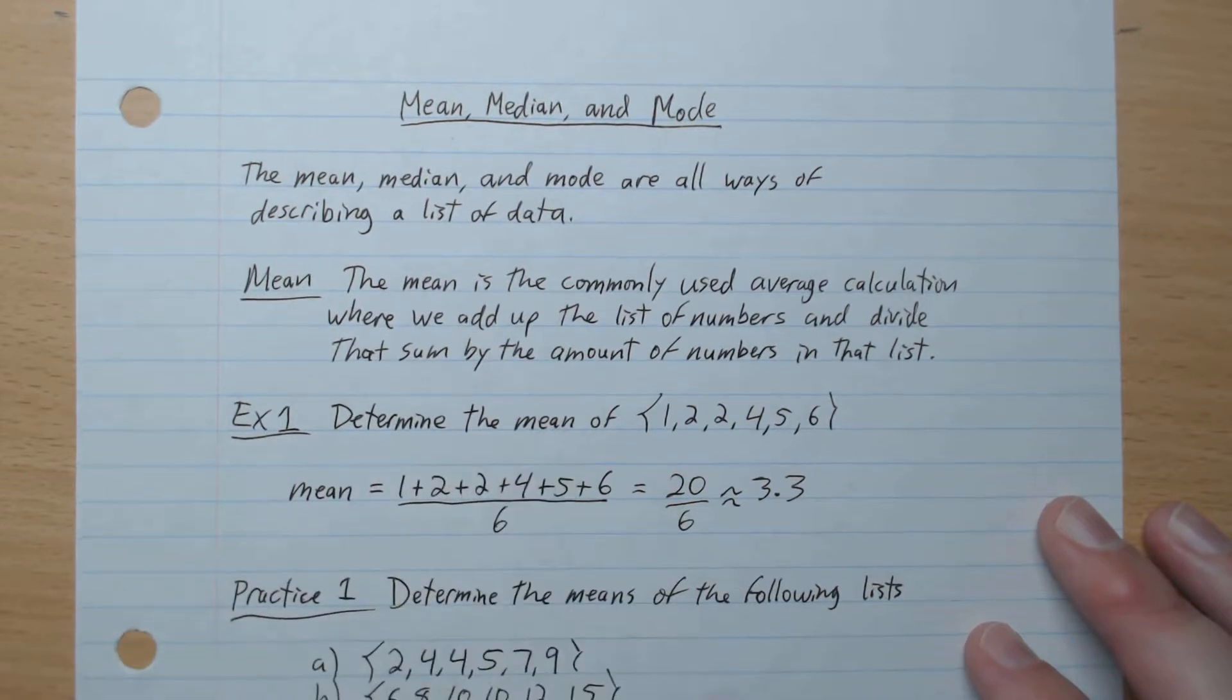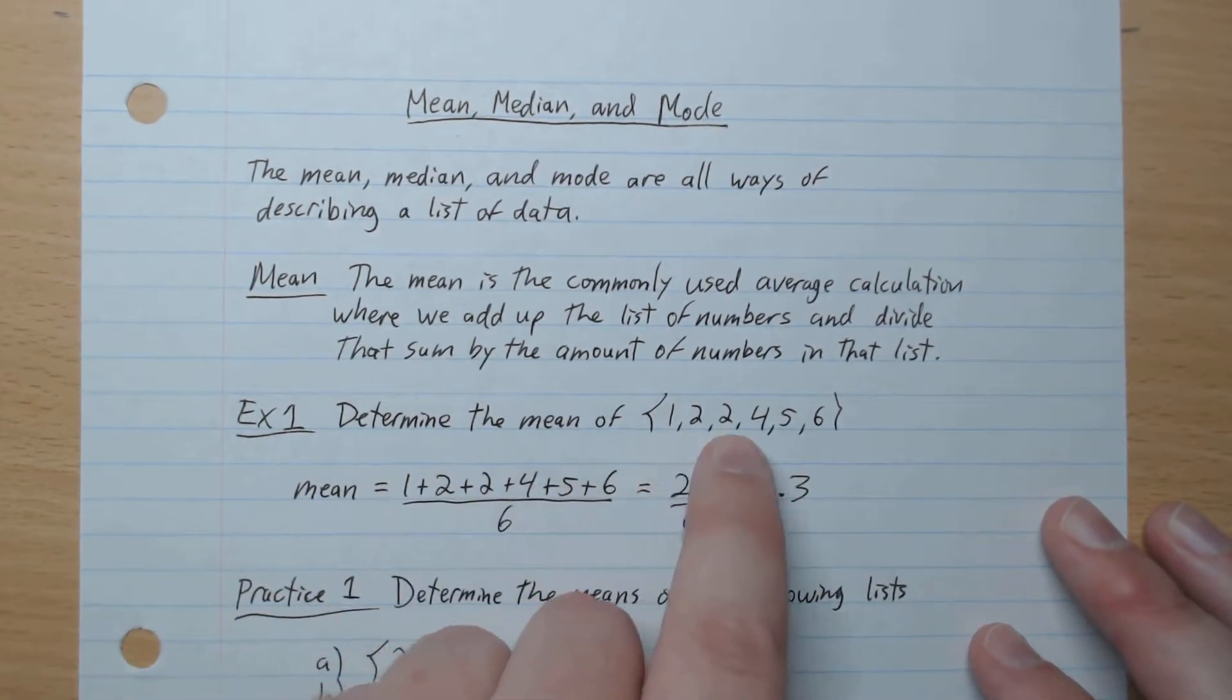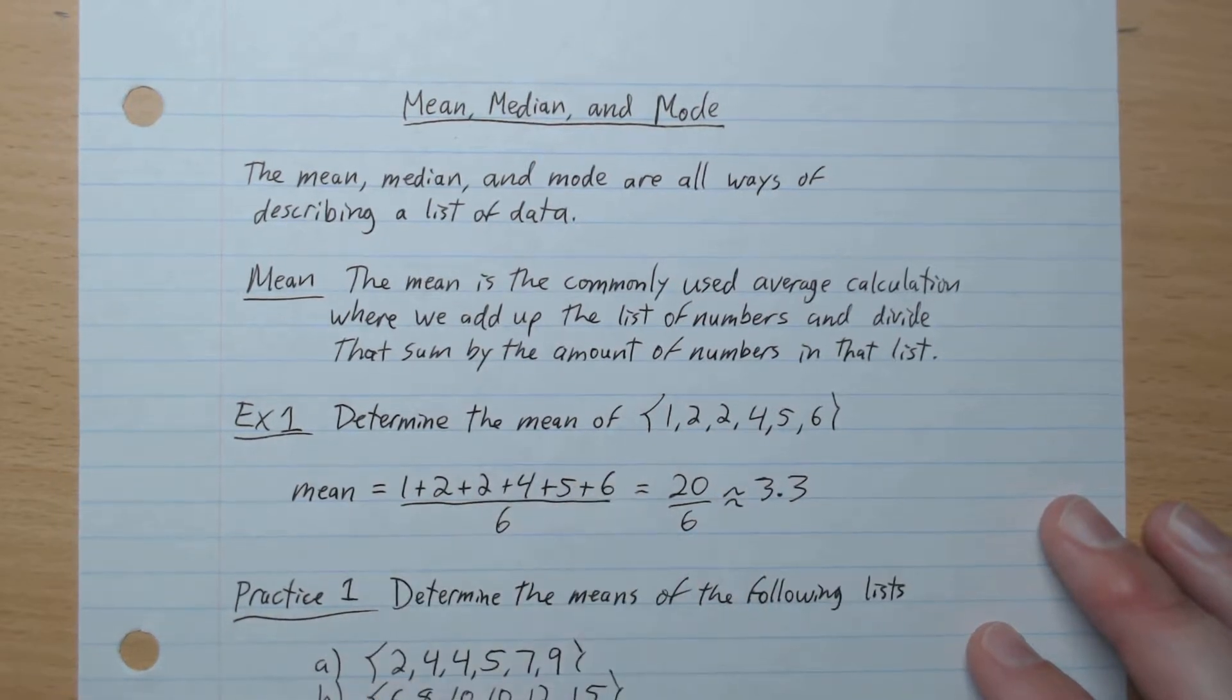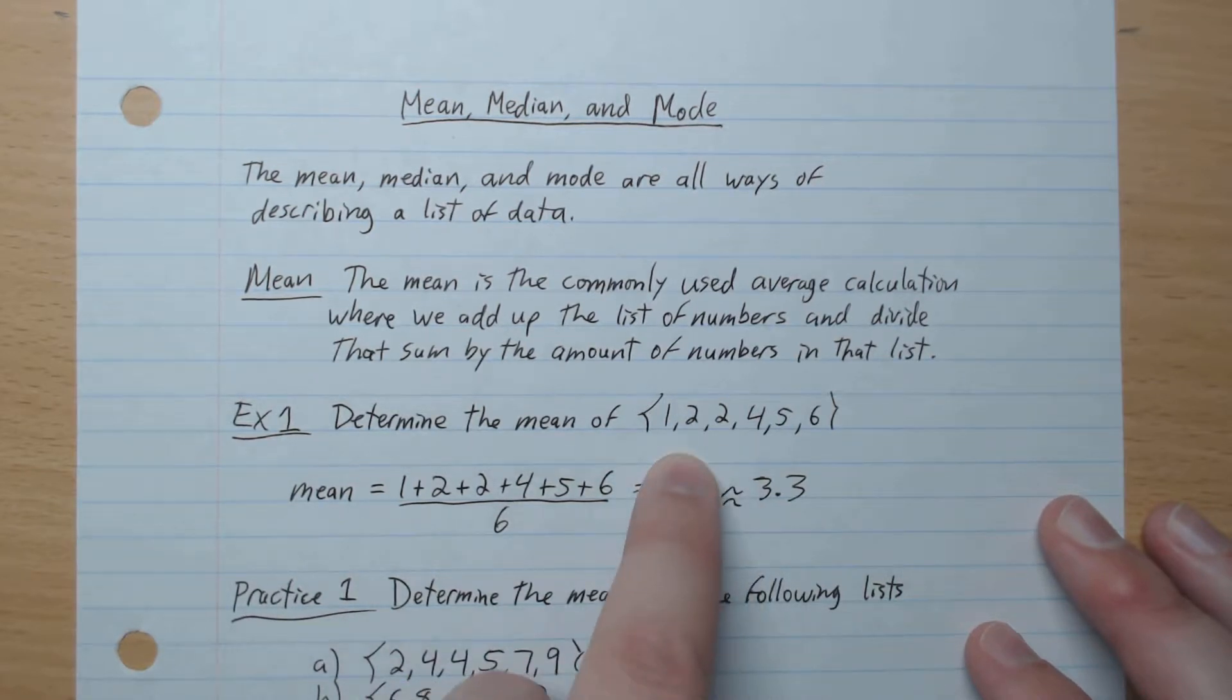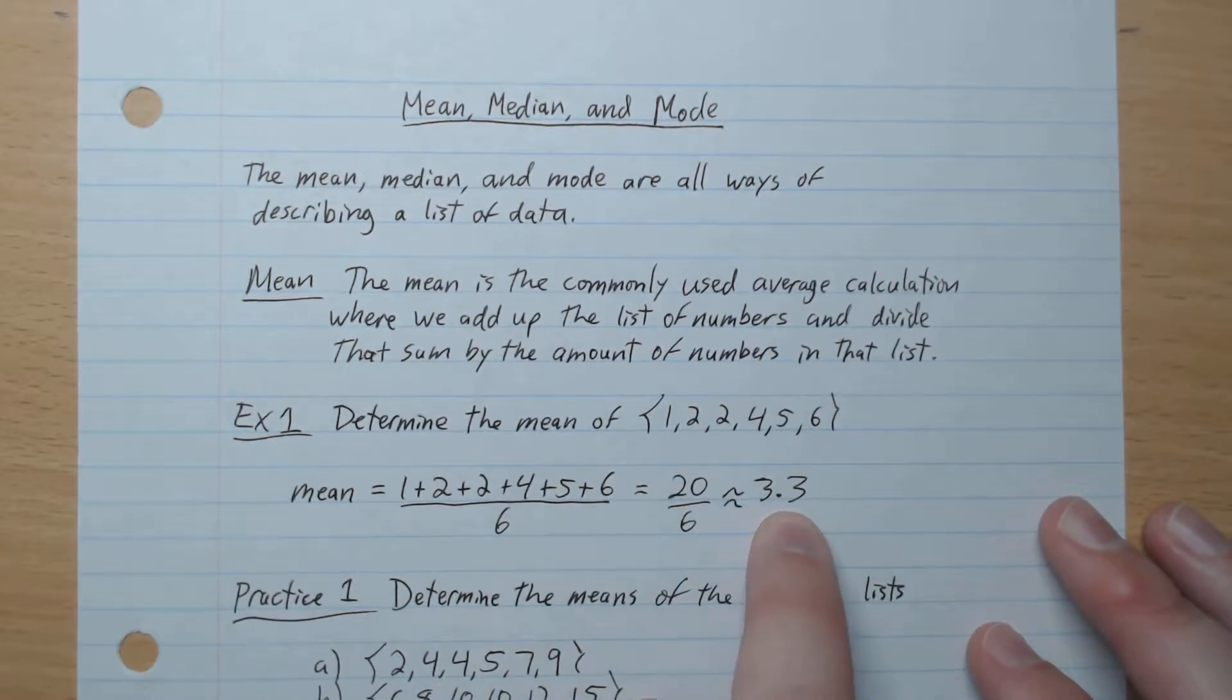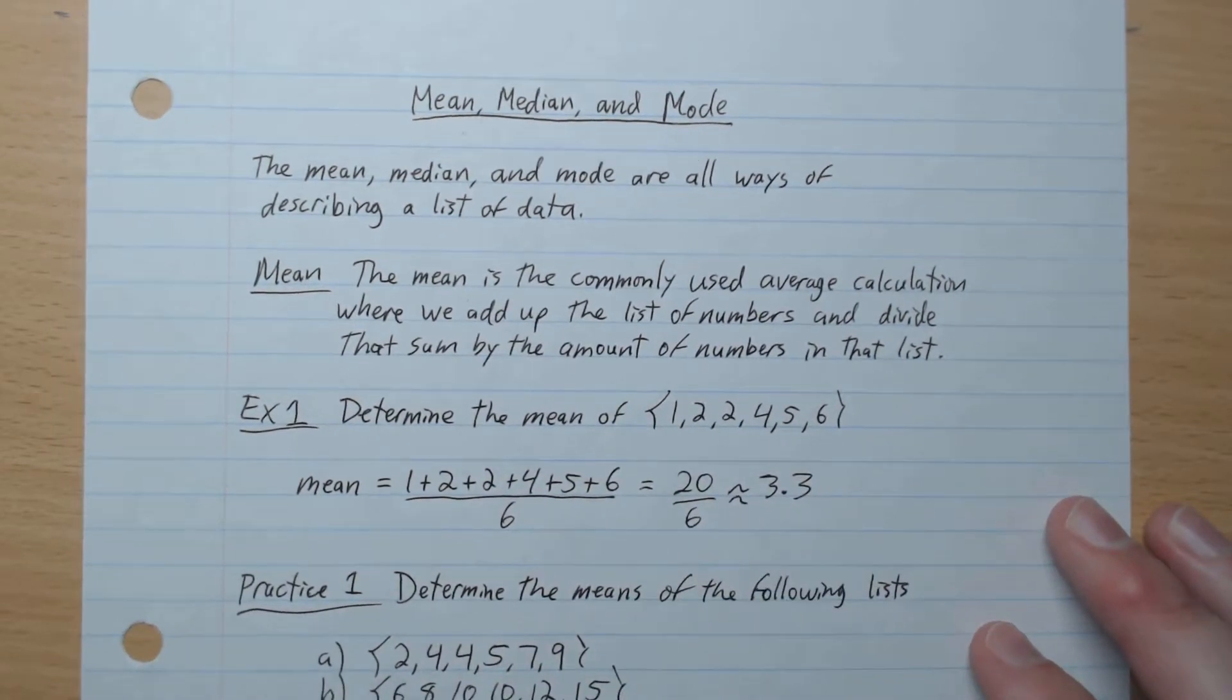So example one, determine the mean of this set. So we add up our numbers, 1, 2, 2, 4, 5, 6, divided by the number of numbers in there, 1, 2, 3, 4, 5, 6, like that. So we have 20 over 6, which is roughly 3.3. So the mean of this list is 3.3.